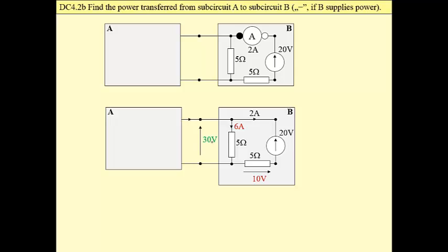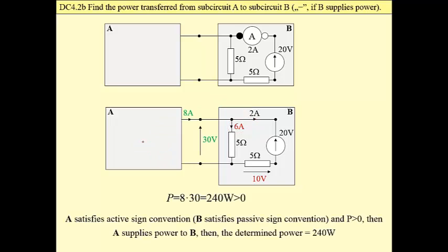And then, knowing these two currents, we may calculate the total current that leaves subcircuit A, that leaves the voltage source that substitutes subcircuit A. This is 8 amperes.